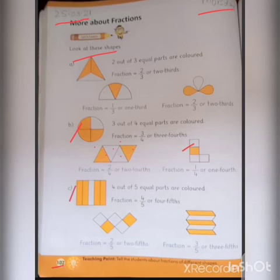Now C, shape number four has five parts colored. So its fraction is 4/5 or four-fifths. Now the next shape.